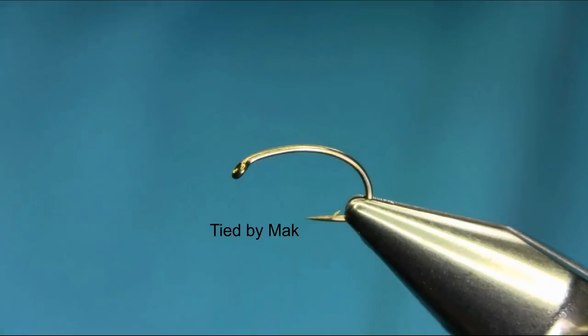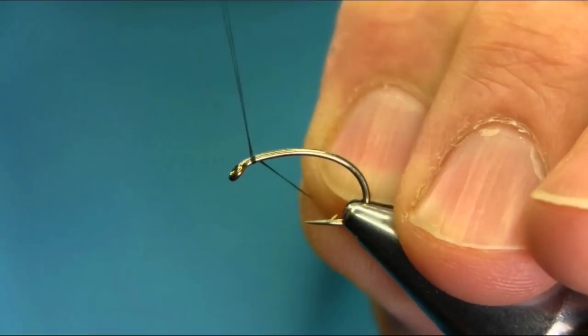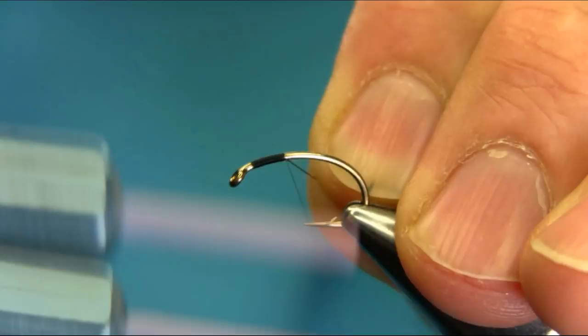Hi everyone, this is size 10 grub hook and thread I'm using is black 8-0. Just start below the eye, touch and turn, and this waste piece.